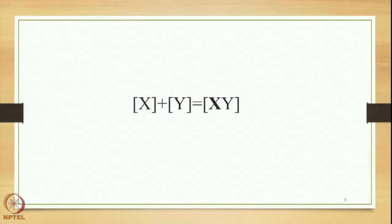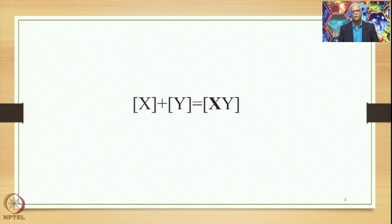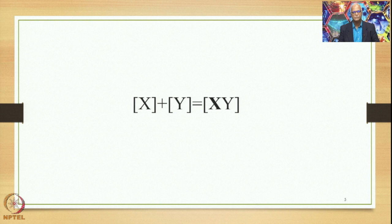The features of the Avyayibhava Samasa can be represented in a simple equation where you have X and Y as two different, independent entities in terms of word form, meaning, and accent. X has a different word form, Y has a different word form, and they both stand out as independent and separate forms. Their meanings are also separate, and each one of them has an accent. The X and Y and their meanings are semantically connected, semantically related.